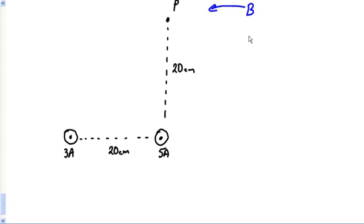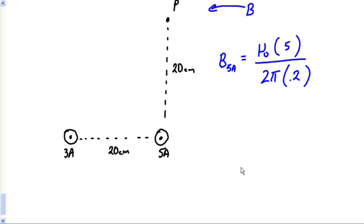I've got two different conductors. I want to find my B for the 5 amp. B for the 5 amp would be μ₀(5) over 2π, and it's at a distance of 0.2 meters from P, so that's easy.